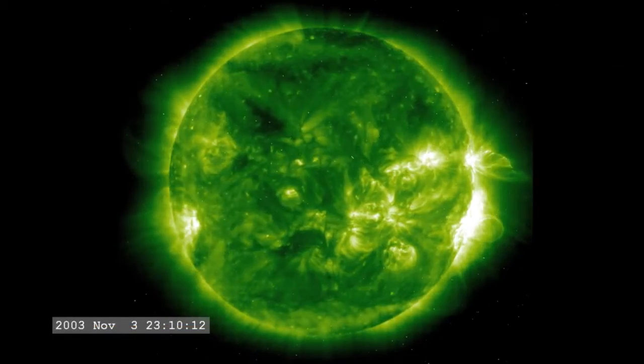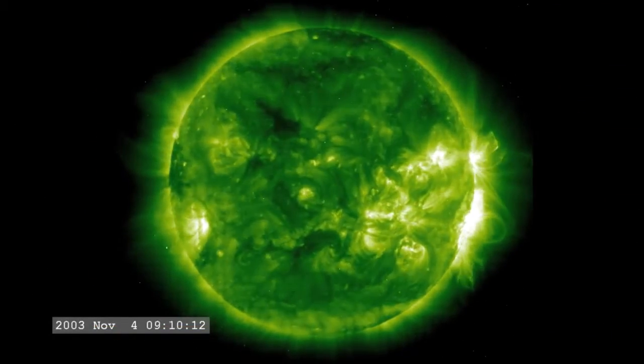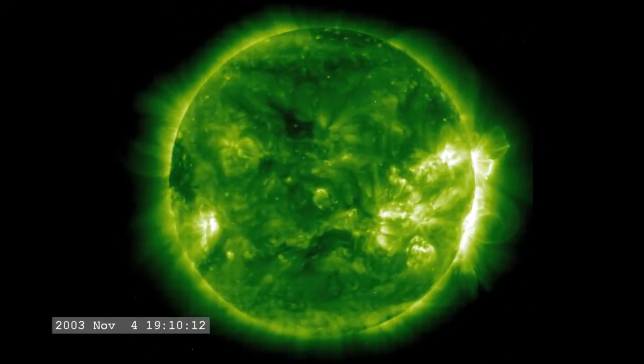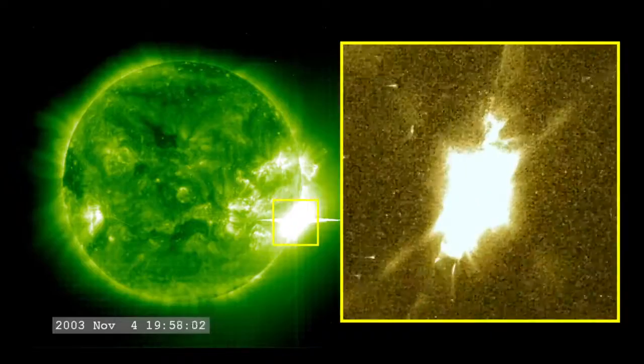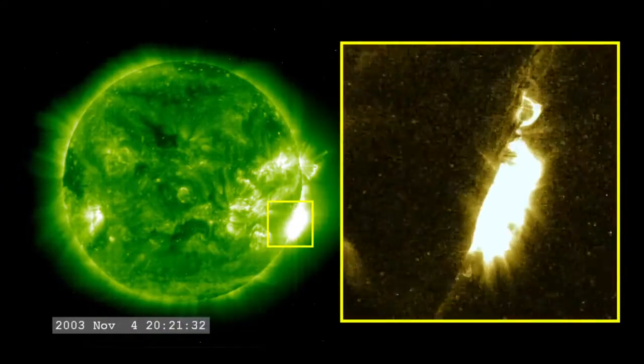The most powerful flare on record was in 2003, during the last solar maximum. It was so powerful that it overloaded the sensors measuring it. They cut out at X17, and the flare was later estimated to be about X45.